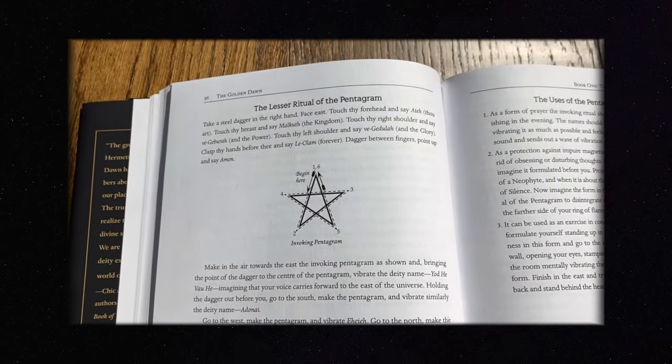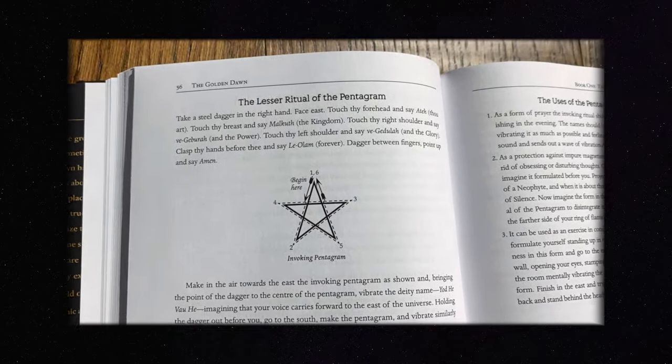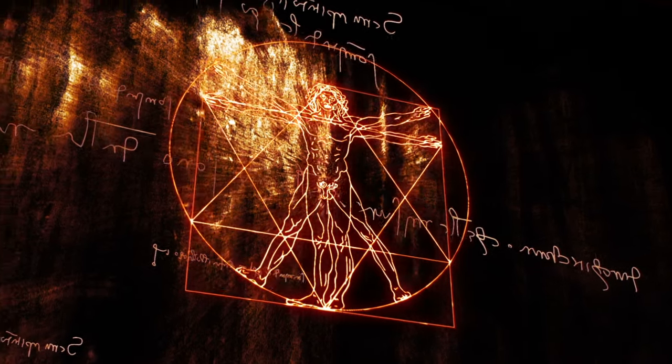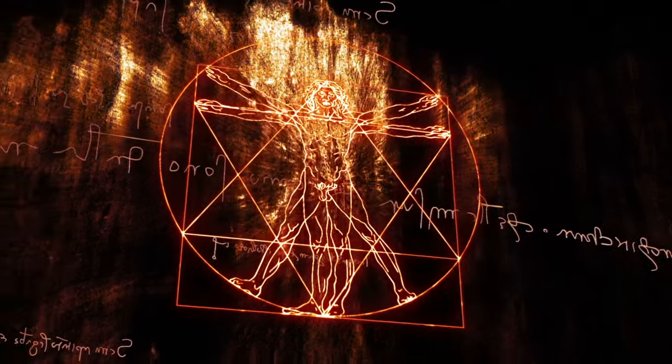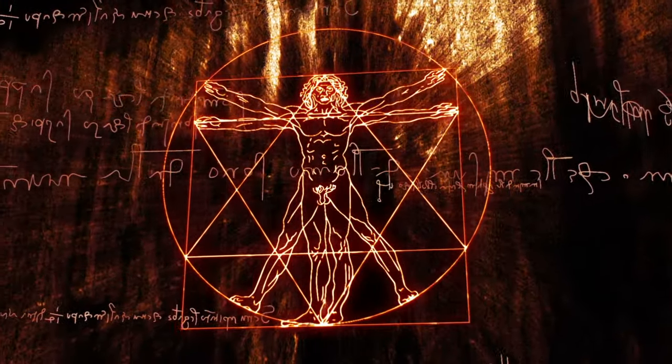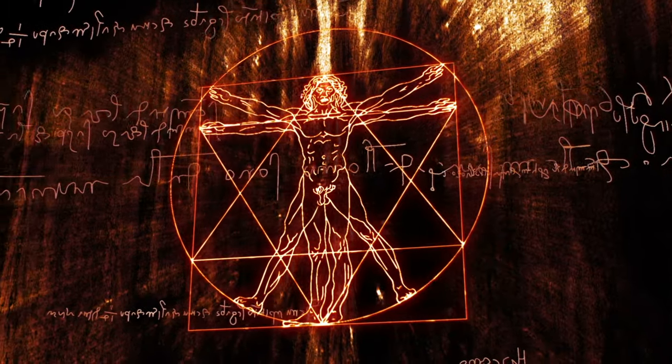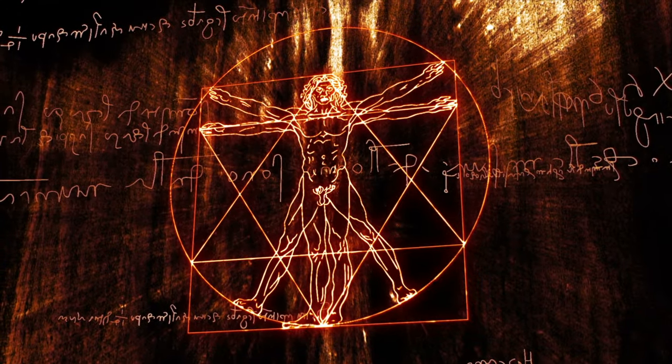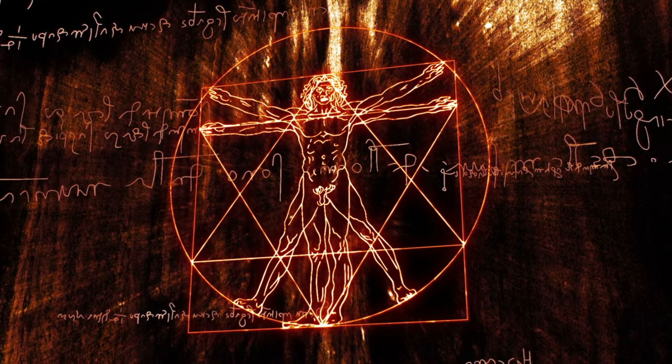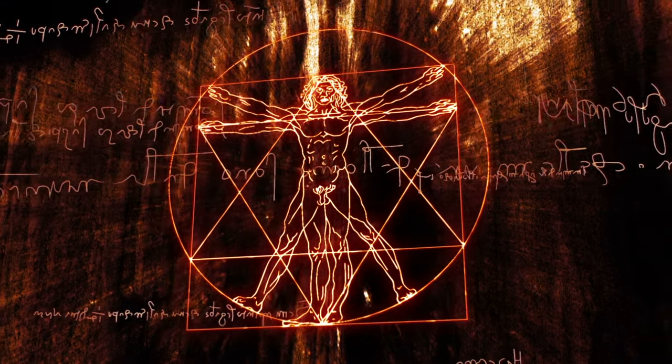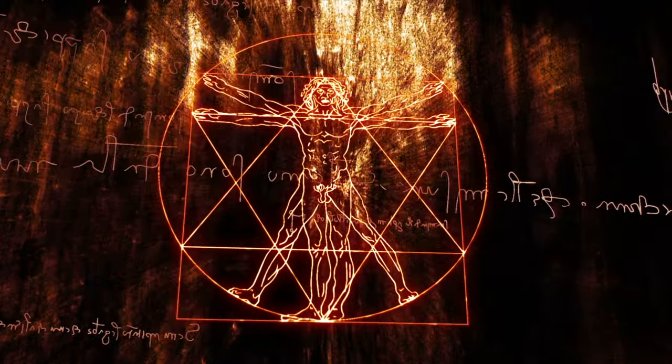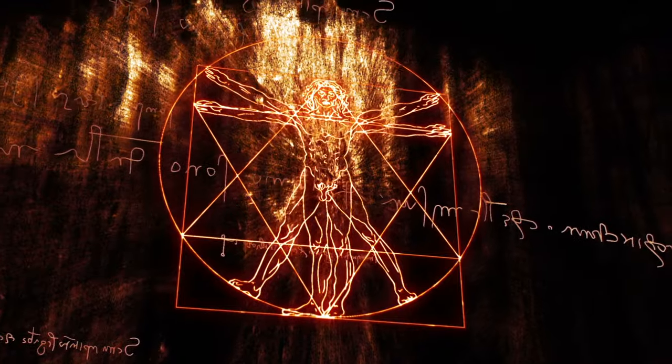The lesser ritual of the pentagram. Take a steel dagger in the right hand, face east. Touch thy forehead and say, Ateh, thou art. Touch thy breast and say, Malkuth, the kingdom. Touch thy right shoulder and say, Ve-Geburah, and the power. Touch thy left shoulder and say, Ve-Gedulah, and the glory. Clasp thy hands before thee and say, Le-Olam, forever. Dagger between fingers. Point up and say, Amen.